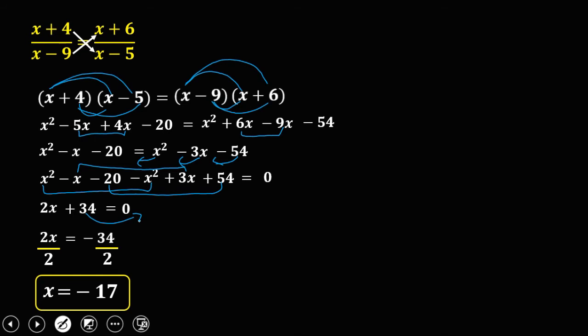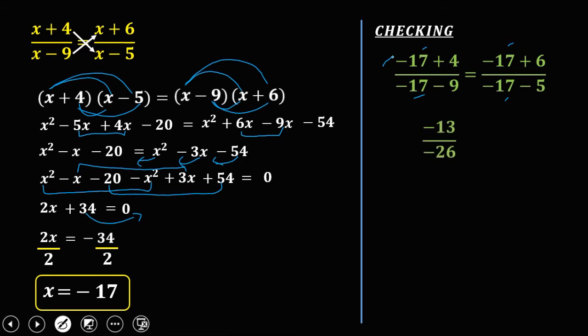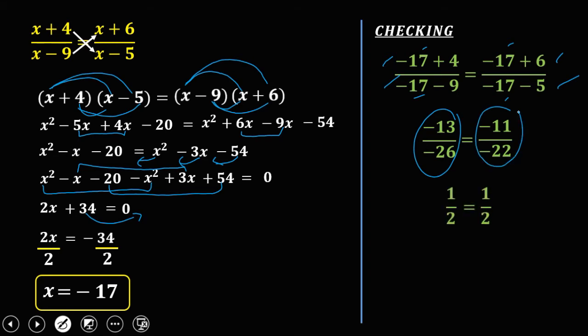To check the answer, substitute negative 17 into the original equation. With x equal to negative 17, simplify: we get negative 13 over negative 26 on one side, and negative 11 over negative 22 on the other. Reducing both fractions gives one half equals one half. Since one half equals one half, x equals negative 17 is the solution.